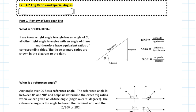If we know a right angle triangle that has an angle of theta, all other right angle triangles with an angle of theta are similar and therefore have equivalent ratios of corresponding sides. The three primary ratios use SOHCAHTOA: sine theta is opposite over hypotenuse, cosine theta is adjacent over hypotenuse, and tan theta is opposite over adjacent. The hypotenuse is the side across from the 90 degree angle.